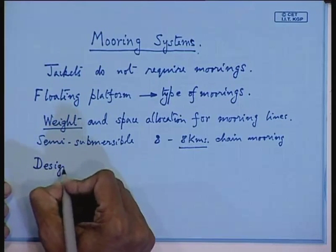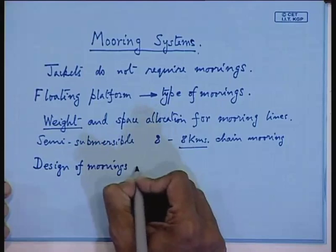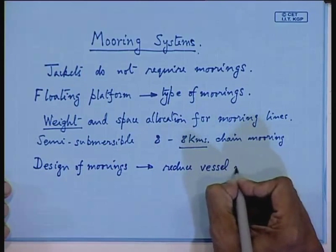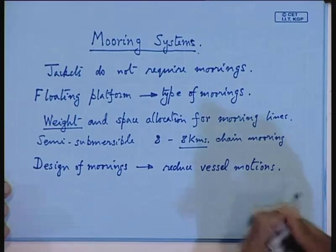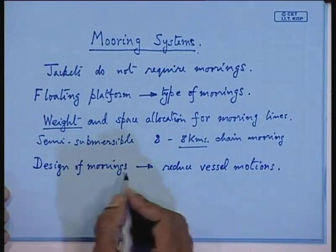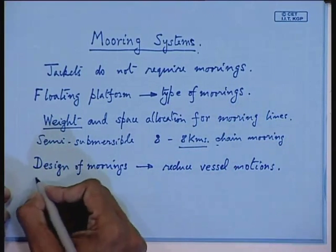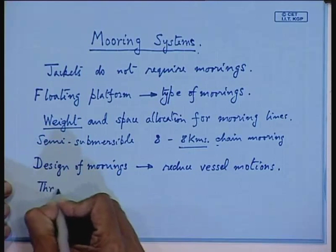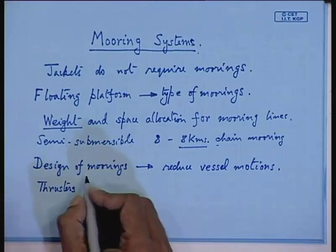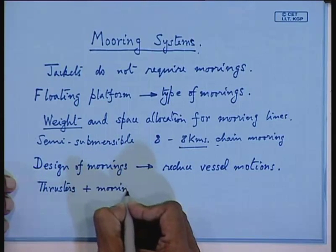Moorings are essentially designed to reduce vessel motions — that is the primary task of any mooring line. Normally, moorings done by means of chains are assisted by thrusters on offshore platforms. You will find thrusters at the bow and stern, supporting the mooring lines. Thrusters together with moorings are normally provided on platforms.